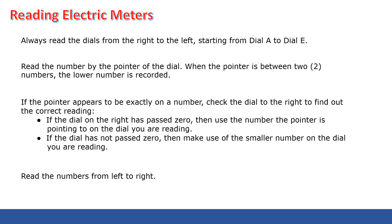When reading an electric meter, always read the dials from right to left, starting from dial A to dial E. The second step: read the number indicated by the pointer. When the pointer is between two numbers, the lower number is recorded. If the pointer appears to be exactly on a number, check the dial to the right. If that dial has passed zero, use the number the pointer is on; if not, use the smaller number.